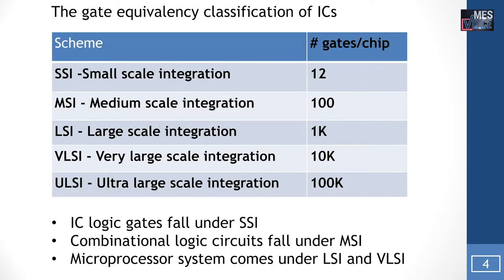ICs are classified based on the complexity of the circuit, that is, based on the number of gates included in a chip. The ICs are classified into small-scale integration, medium-scale integration, large-scale integration, very-large-scale integration, and ultra-large-scale integration.